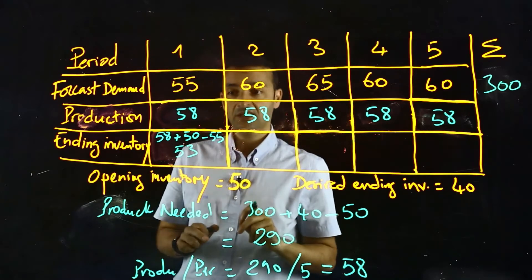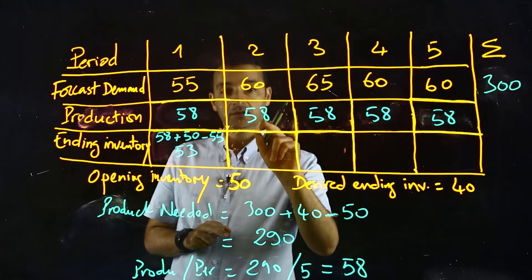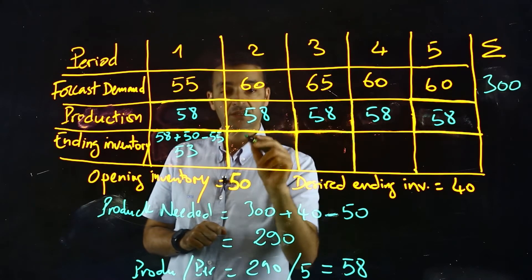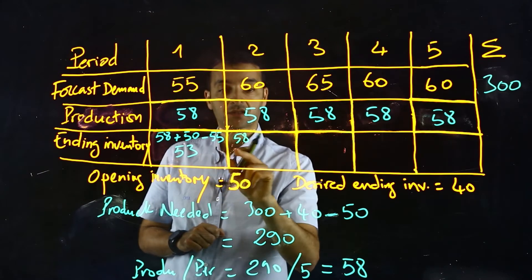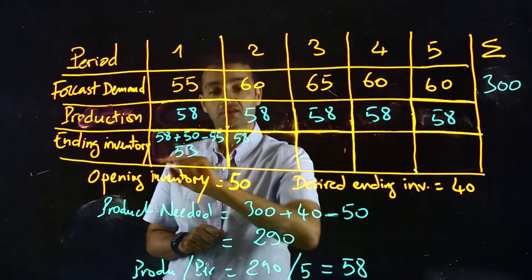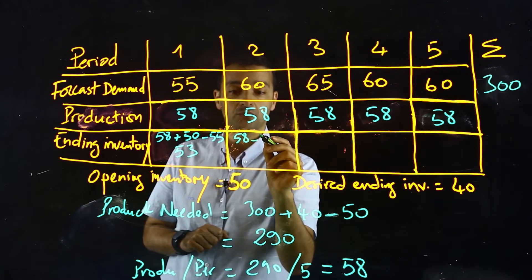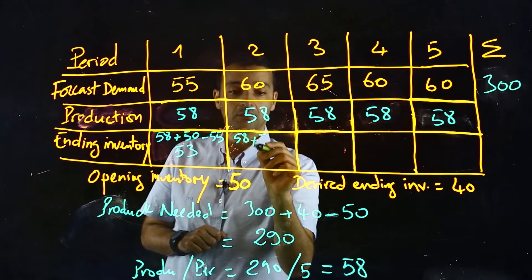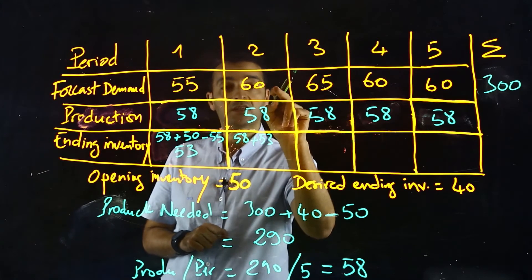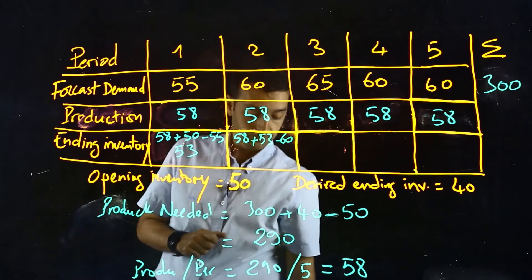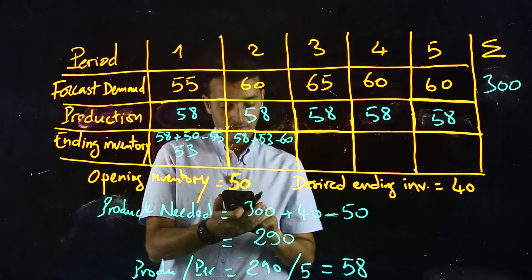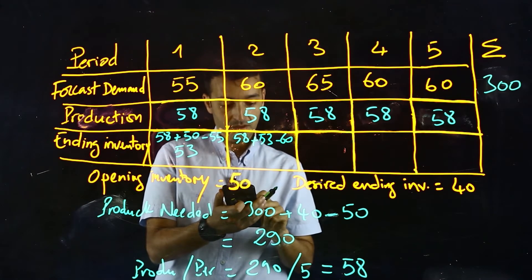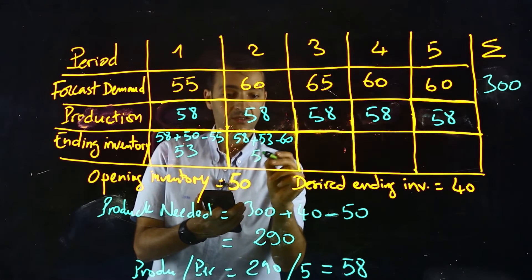Now we do the same thing for the next period. We produce 58 units and the opening inventory for this period is the ending inventory of the previous period, which is 53, minus the demand of 60. So 58 plus 53 minus 60 — the result is 51.